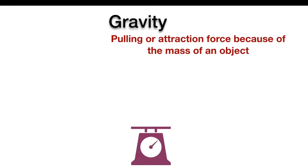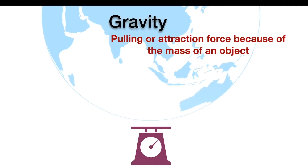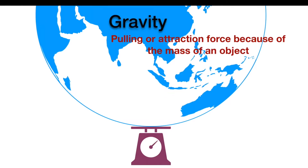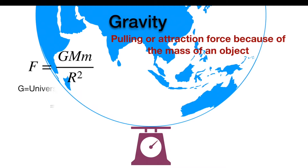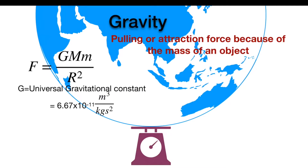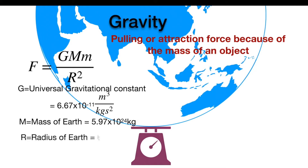Gravity is a pulling or attraction force because of the mass of an object. It is a weak force, but since the Earth has a large mass, the force of gravity due to its mass is noticeable. This force of gravity on an object near the Earth's surface is given by the formula F = GMm/R², where G is the universal gravitational constant, capital M is the mass of the Earth, R is the radius of the Earth, and small m is the mass of the object.